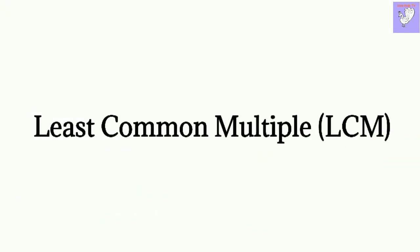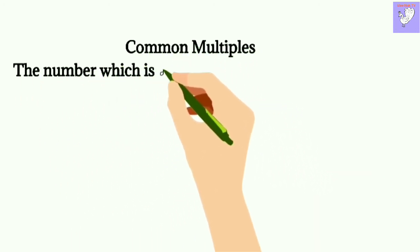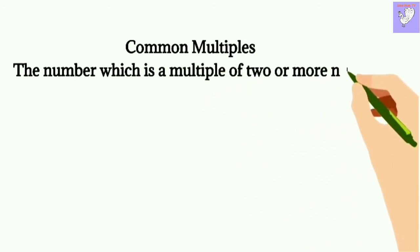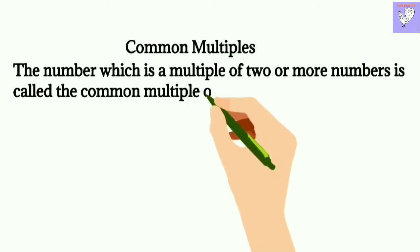Before we start with the least common multiples, let me explain about common multiples. The number which is a multiple of two or more numbers is called the common multiple of those numbers.